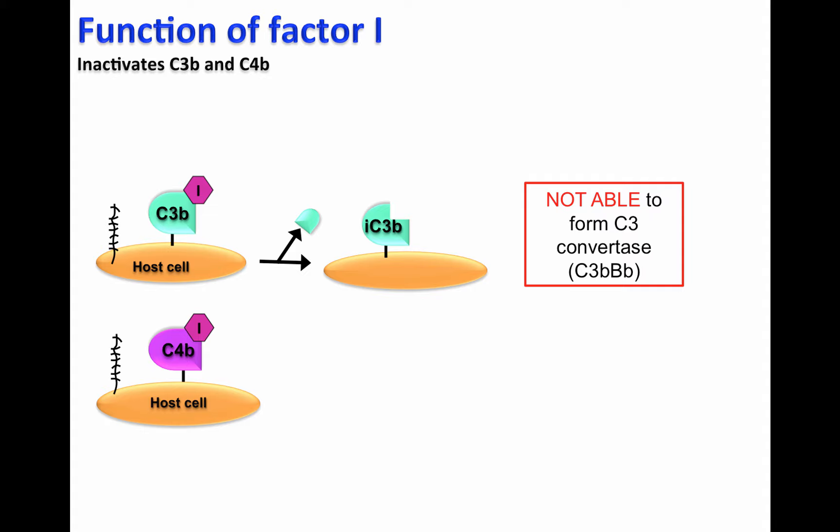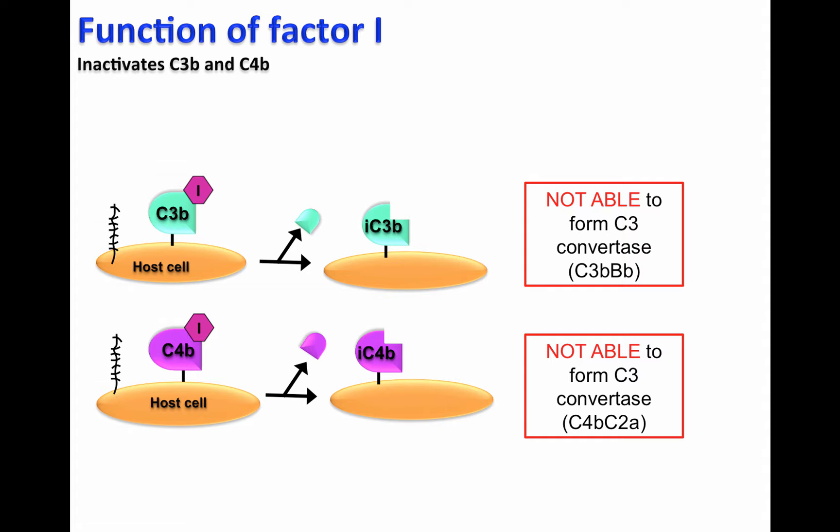Factor I also will cleave C4b generating the inactive form of C4b, called iC4b. This will not be able to form the C3 convertase of the classical and lectin pathway, called C4bC2a.